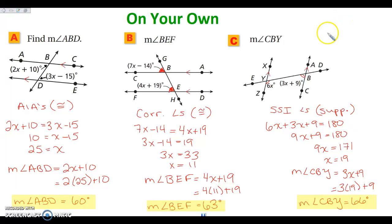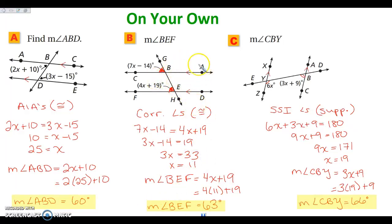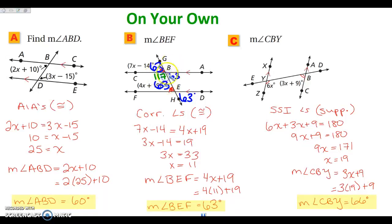I want to show you something quickly. When we plugged in, we found that the measure of angle BEF was 63 degrees. If you know one angle when you have parallel lines, you know all the other seven. The corresponding angle is also 63 because we set them equal. Then the vertical angles at each intersection are also 63. The same-side interior angles add to 180, so those are 117 degrees, and their vertical angles are also 117. So if you know one angle when your lines are parallel, you can find the other seven.